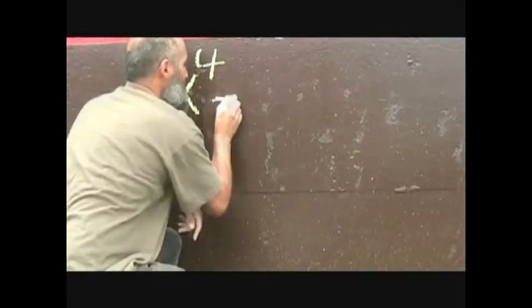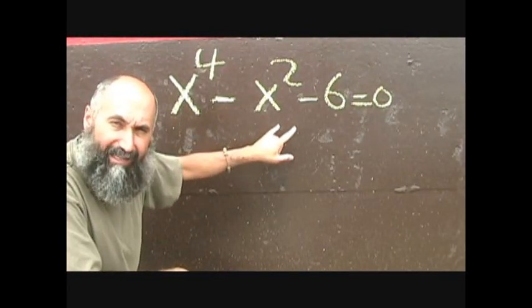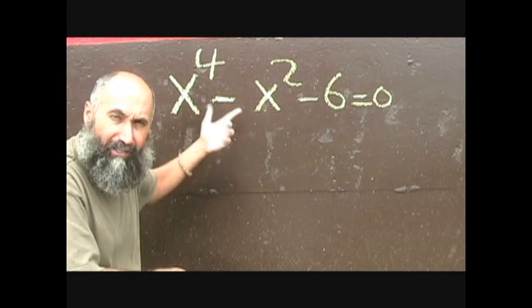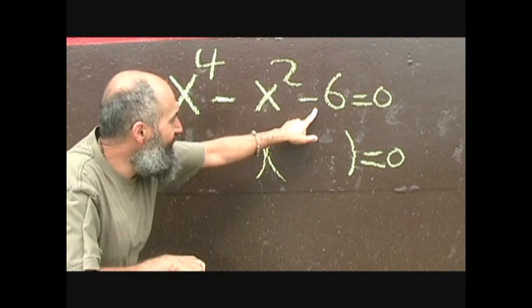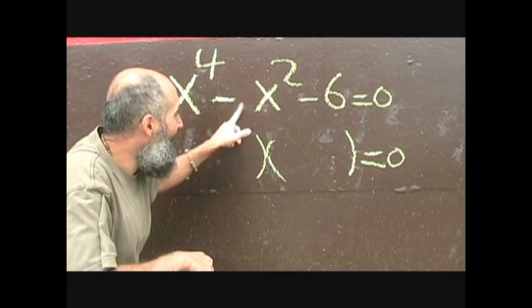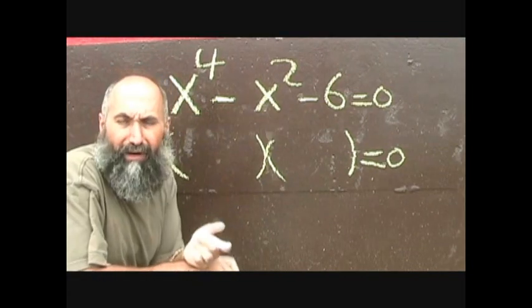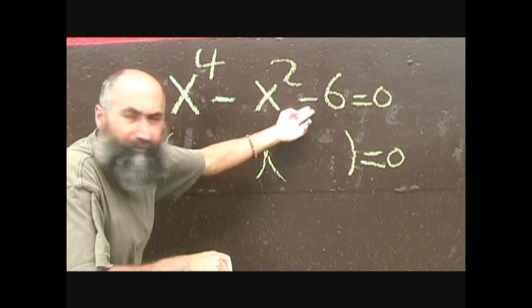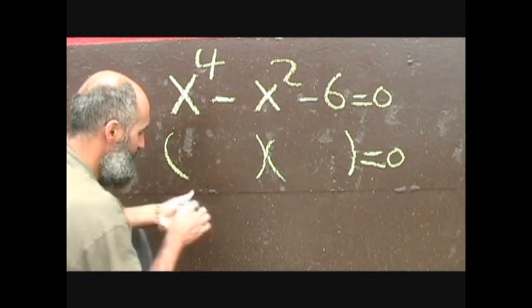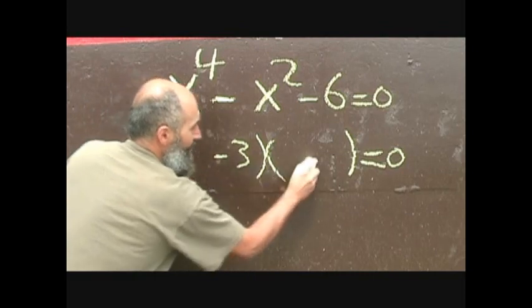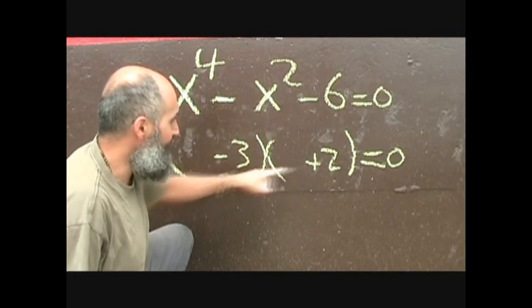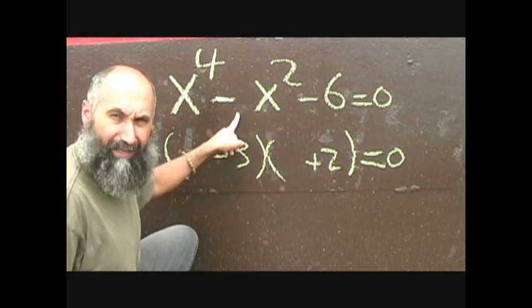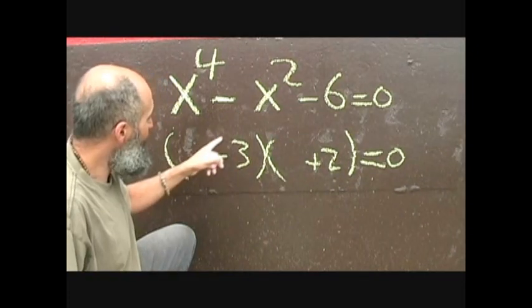Let's do a couple more questions. What I did here was change the sign and drop the 5, changing the sign for the 6 as well. So again, you go bracket, bracket, and ask yourself: what are two numbers that multiply to give you negative 6? Since there's no middle coefficient, it's a 1, so they add to give you negative 1. We're dealing with 2 and 3 again — it's going to be negative 3 and positive 2, because negative 3 times 2 is negative 6 and negative 3 plus 2 is negative 1.